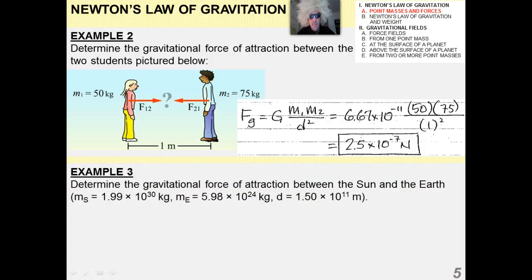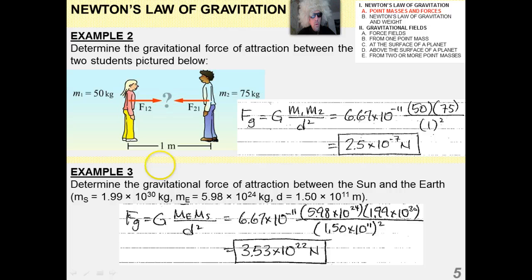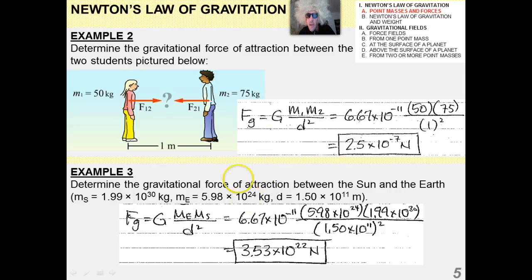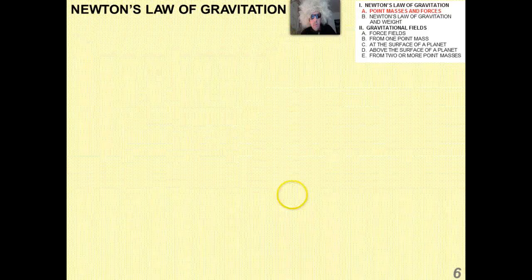The gravitational force of attraction between the Sun and the Earth — or, what is the weight of the Earth in the Sun's gravitational field? The answer is 3.53 times 10 to the 22 Newtons. Would the Earth feel that force? You bet — that's what's keeping the Earth going around the Sun. And that force equals mv squared over r, which shows how we'd use this to solve further problems.